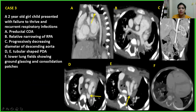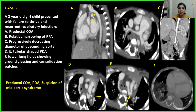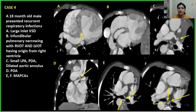Case 3: A case in which we found coarctation of aorta — pre-ductal — and relative narrowing of the RPA. There was progressive decreasing diameter of the descending aorta, and a tubular-shaped PDA was seen. In the lower lung fields, ground-glass opacities and consolidation were noted. This was a case of pre-ductal coarctation of aorta with PDA and suspicion of mid-aortic syndrome.